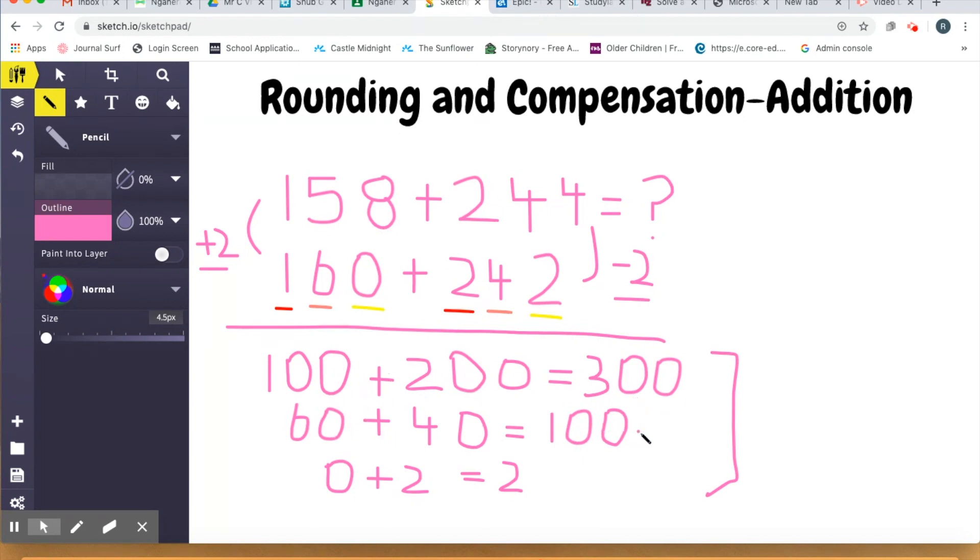Now it's a matter of adding those up. So my 100 and 200 makes 300. 60 and 40 makes 100. I know that because 6 and 4 makes 10, adding on an extra zero for the different place value column. And then 0 and 2 makes 2. Now when I add those together, 300, 400, 402, which means my final answer has to be 402.